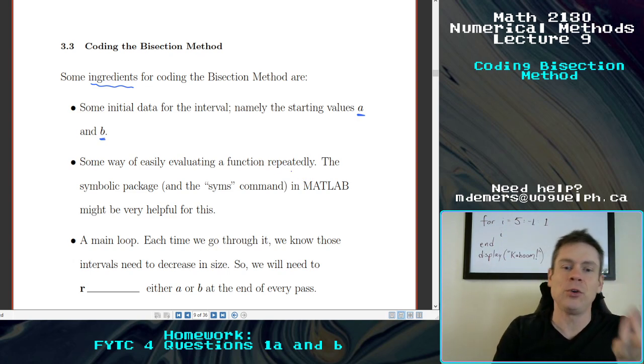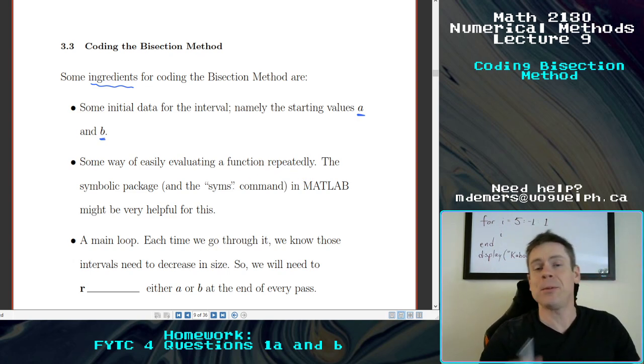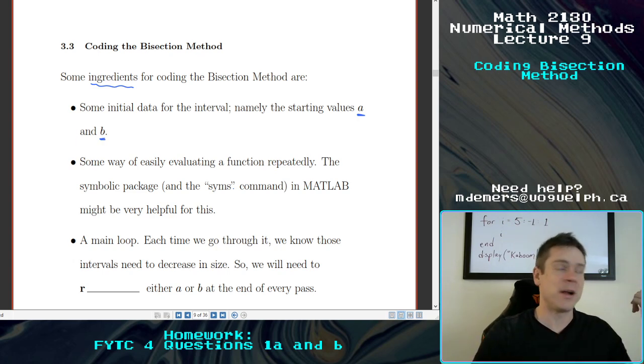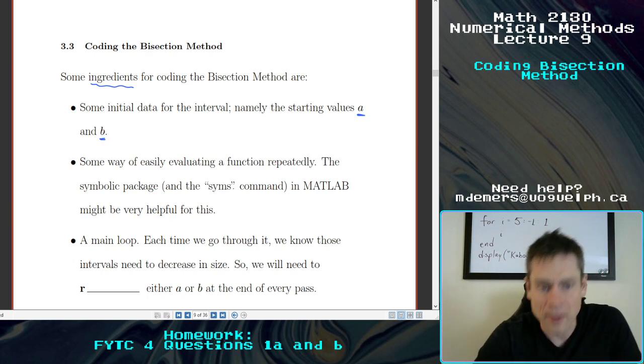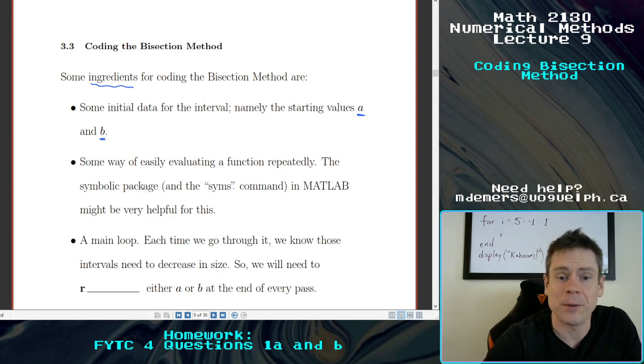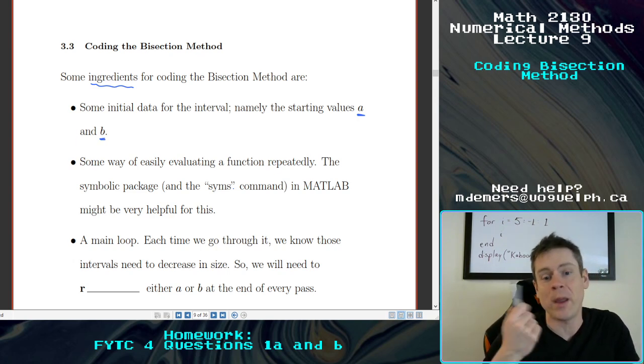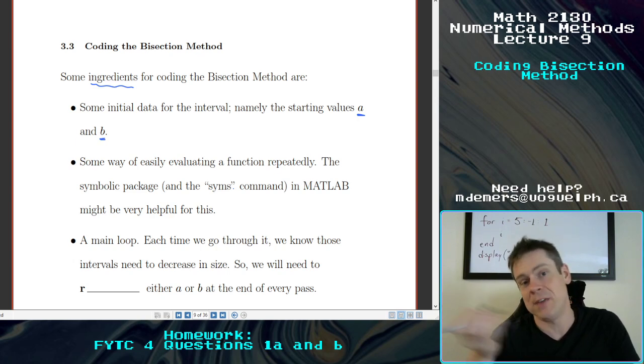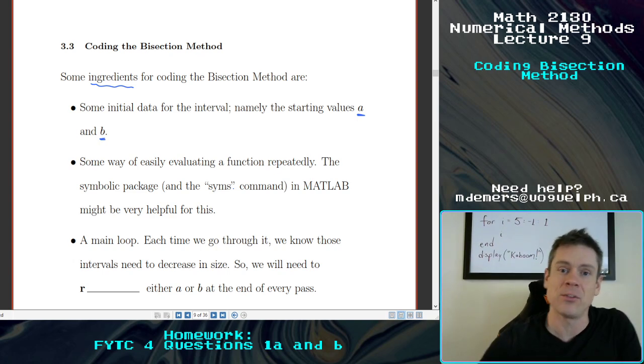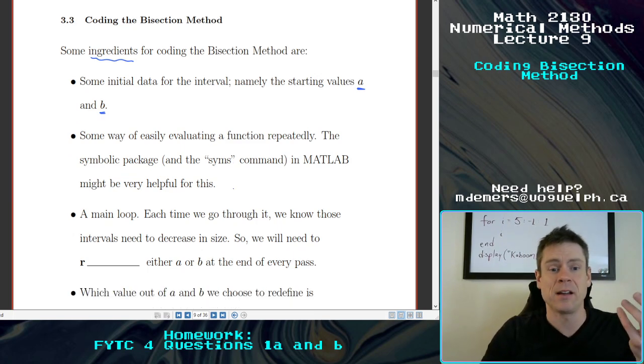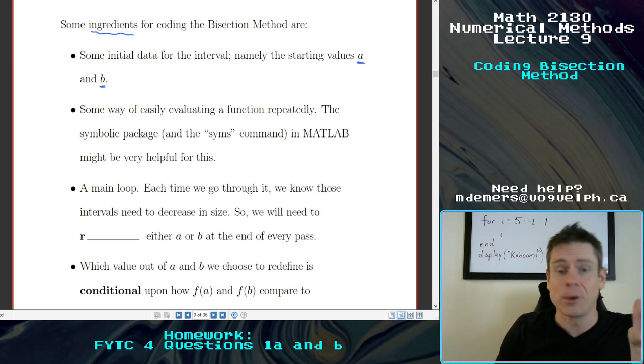There are a few different ways that you'll be able to evaluate a function. And you want to be able to do this repeatedly. As we saw, it took us a little bit of tedious work to do bisection method for a few iterations. It's nice to be able to have some method to do that using a computer. The symbolic package in the sims command gives us a way of doing this in MATLAB but there may be a few different ways to do that. So feel free to do some research if you don't particularly love this method. But this is what I will be using for my code that I've prepared. Okay, we want to repeat something again and again and again. That sounds a whole lot like a loop.